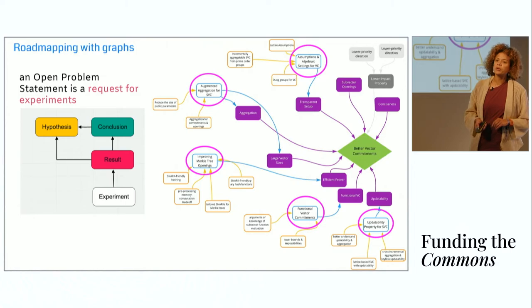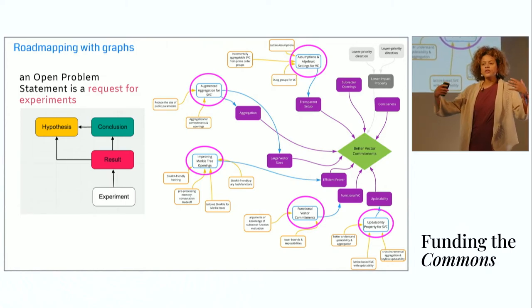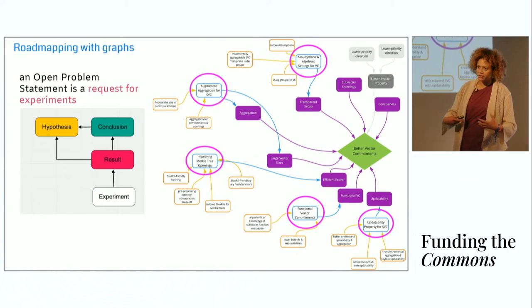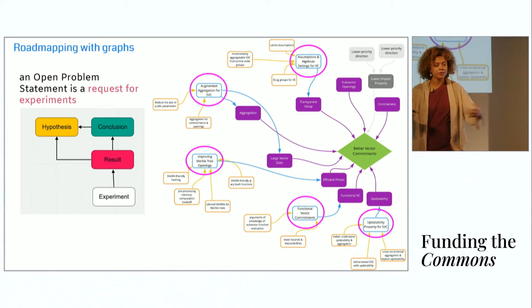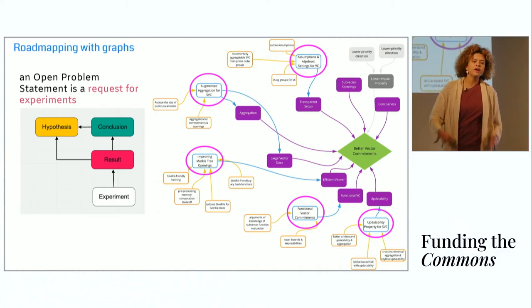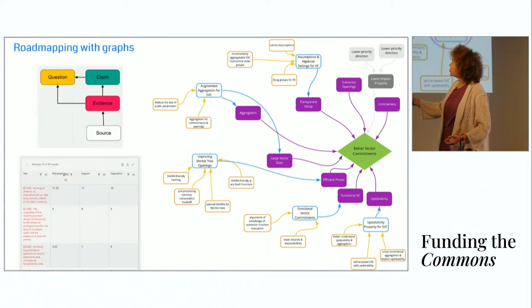Again, an open problem statement is a request for experiments. So we're shifting now from the internal discourse graph-like project of creating the roadmap that you may do with a small circle of collaborators, and externalizing the problem. You're inviting people to the conversation by asking them to contribute results graphs to solve the problems identified in these nodes. And now I'm going to describe something, I'm going to pull out what's called the evidence door.